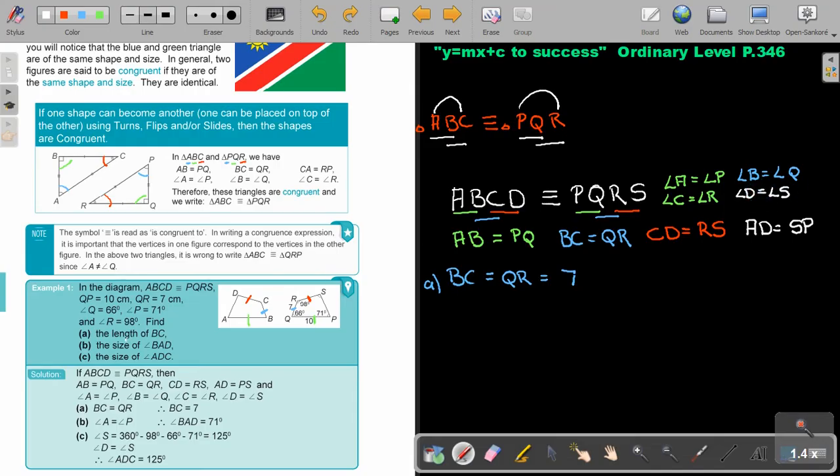So, basically, this is what I do there. Now, if I also find the size of angle BAD, it's angle A. And angle A, don't forget. Angle A is equal to angle P is equal to 71 degrees. That's how I got it.